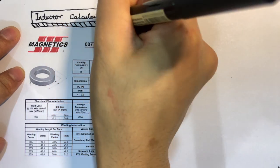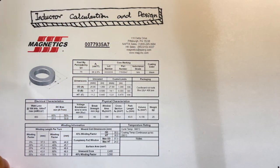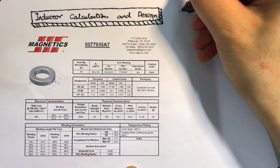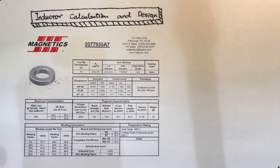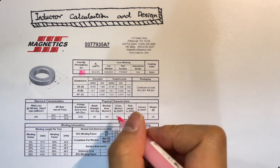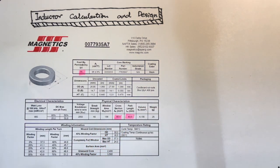The core we are using is 007793587. This is the data sheet of the magnetic core. The key parameters are magnetic path LE, cross section area AE, relative permeability mu.